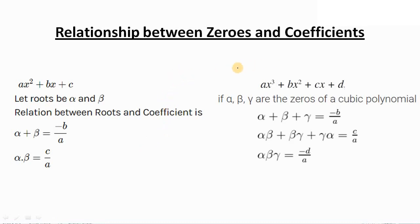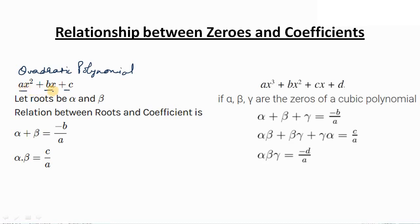Relationship between zeros and coefficients. For a quadratic polynomial, if we consider a polynomial to be ax² + bx + c, where a is the coefficient of x², b is the coefficient of x, and c is the constant term. Since this is a quadratic polynomial, there will be two roots or two zeros, and we have considered zeros as alpha and beta.